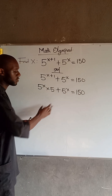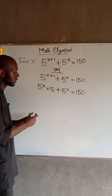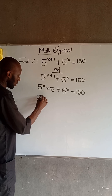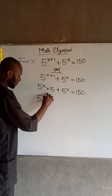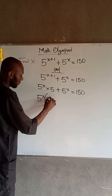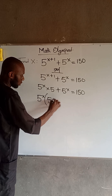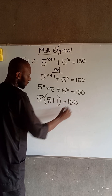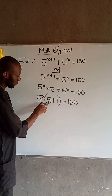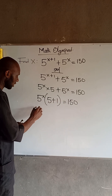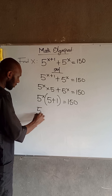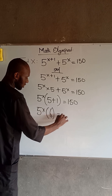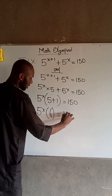Now at this point, we can factor out 5 to the power of x. So we have that 5 to the power of x, open your bracket, 5 plus 1, is equal to 150. So 5 plus 1 is 6, so we have that 5 to the power of x multiplied by 6 is equal to 150.